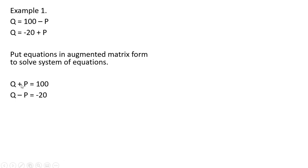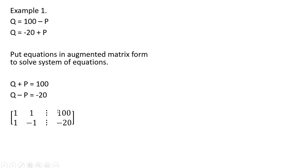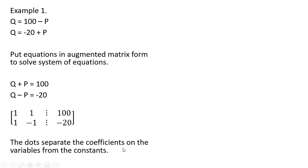We want the variables to line up in columns, so all the q variables should line up in a column, and all the price variables should line up in a column. Putting these two equations into the matrix: the coefficient on q is 1, the coefficient on q in the second row is also 1, the coefficient on the price variable is 1, and the coefficient on the second price variable is minus 1. The dots separate the coefficients on the variables from the constants.